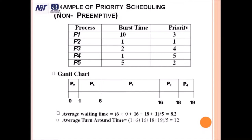Now we have to calculate the average waiting time. The waiting time of P1 is 6 minus 0, that is 6. For P2, it starts at zero and its arrival time is also zero, so waiting time is 0. For P3, it starts execution at 16 milliseconds and arrival time is zero, so waiting time is 16. The waiting time of P4 is 18. And the waiting time of P5 is 1. The average waiting time is 6 plus 0 plus 16 plus 18 plus 1 divided by 5, and we get the result 8.2 milliseconds.